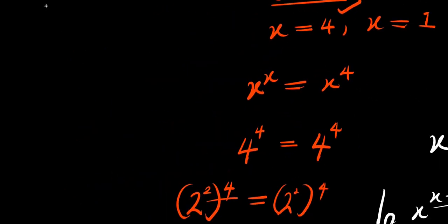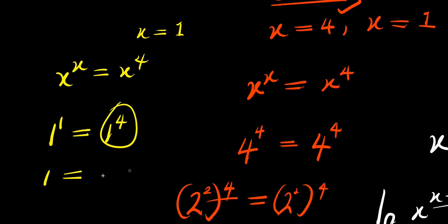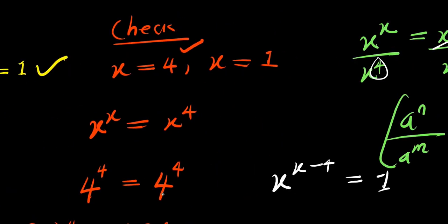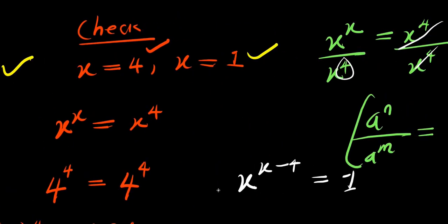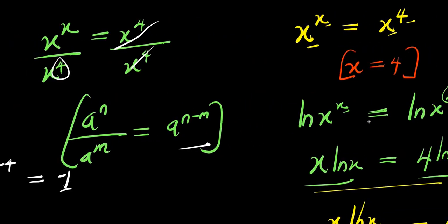Now let's consider when x equals 1. We have 1 to the power of 1 equals 1 to the power of 4. 1 to the power of 1 is 1, and 1 raised to any power is 1, so 1 equals 1. This also satisfies the equation. So the two values x equals 4 and x equals 1 have both been proven correct. To get both values, you need to use the natural log method. Thank you and goodbye.